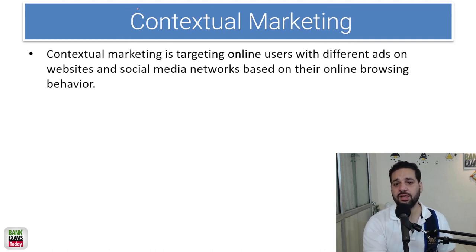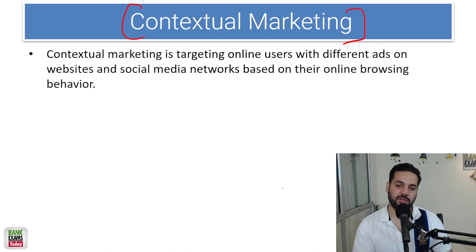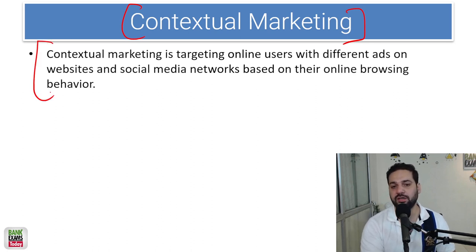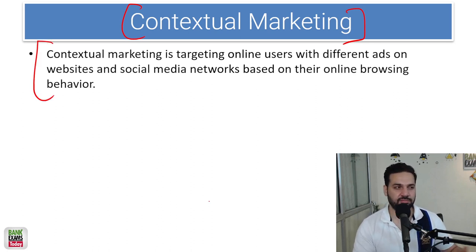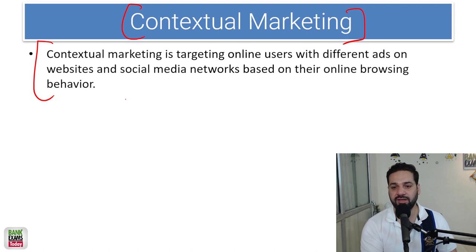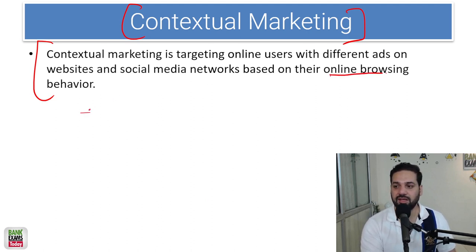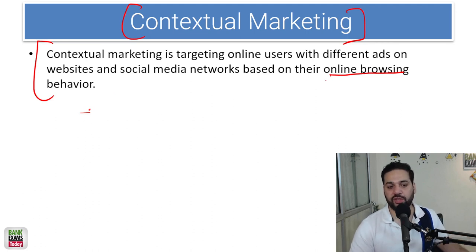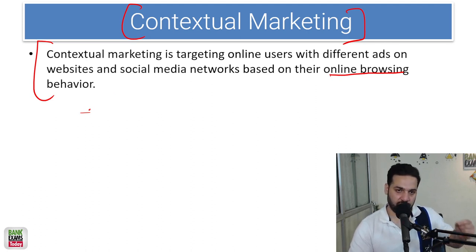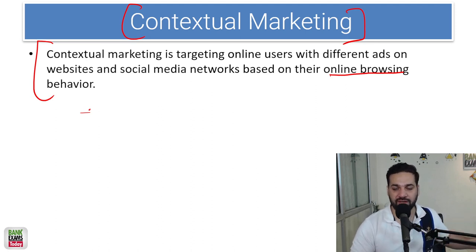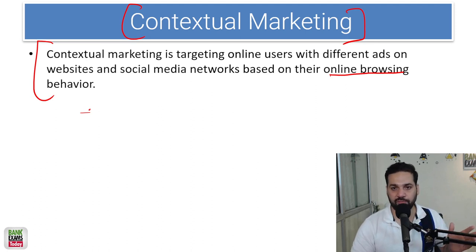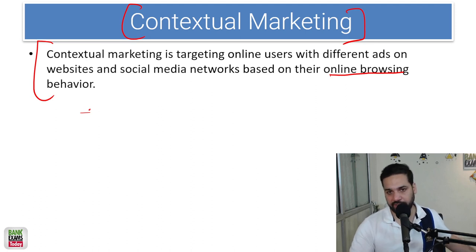Contextual marketing is not very common nowadays, but if you are reading a blog on bankexamstudy.com, you might have noticed that in between the content there are links that take you to courses. For example, you've gone through a banking awareness article, and there is a course for banking awareness that costs 500 rupees. If 1,000 people are reading it, maybe three to five people are going to buy it.